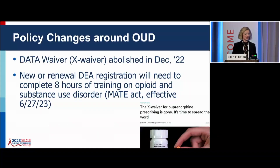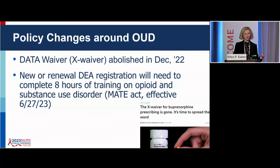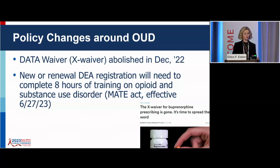I'm going to give you some hopeful data around policy changes. The X-waiver is gone. The X-waiver was additional certification for DEA-certified clinicians — upon completion of eight hours of additional training, you could get an X-waiver. It is no longer required because we realized it was a barrier to treatment. Now, for anyone who has an active DEA or is going through the renewal process, you will need to complete eight hours of training on opioid and substance use disorder. This is part of the MATE Act, which went into effect in June of 2023.